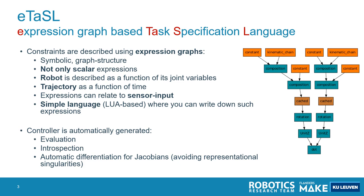ETASL uses a concept of expression graphs — these are symbolic expressions represented by a graph structure, and they are not only scalar expressions but can also be valued in orientation matrices, transformation matrices, vectors, twists, wrenches, and so on. Robots are also described as a function of joint variables using such expressions, and the same applies to trajectories, which are expressions in function of time. Expressions can also relate to sensor inputs. There is also a simple LUA-based language where you can write these expressions down as you would on paper, and the graph structure is automatically built.